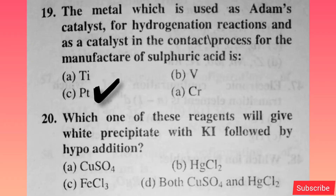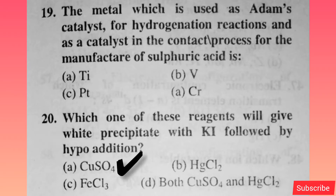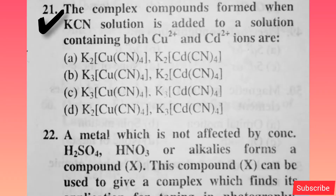— option C is correct. Which one of the following reagents will give a precipitate with KI followed by hypo addition? Option A is right. The complex compounds formed when KCN solution is added to the solution containing both Cu positive and Cd2 positive — option B is correct.